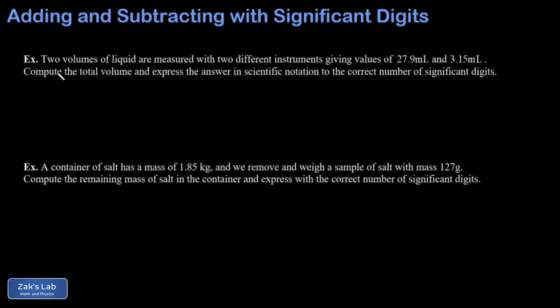In the first example, we're told that two volumes of liquid are measured with two different instruments giving a value of 27.9 milliliters and then a more precise value for the second measurement of 3.15 milliliters. We're asked to compute the total volume and express the answer in scientific notation to the correct number of significant digits.